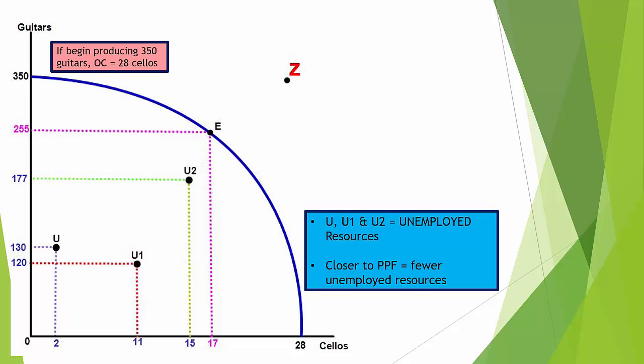Being on the PPF line itself shows there are no unemployed resources. Since the PPF is defined as showing the maximum possible combination, being on the line means all resources have been used to produce the maximum output possible from the given number of inputs.